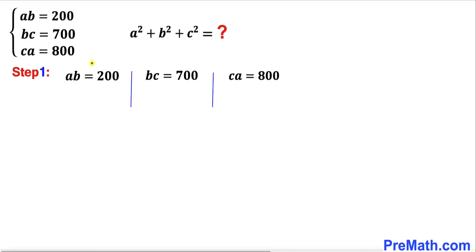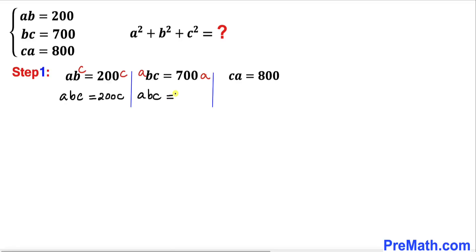Now let's manipulate these three equations. For the first one, I'll multiply both sides by c, giving abc = 200c. For the second equation, multiply both sides by a, giving abc = 700a. Finally, for the third equation, multiply both sides by b, giving abc = 800b.